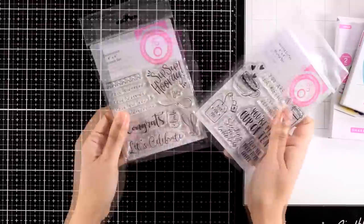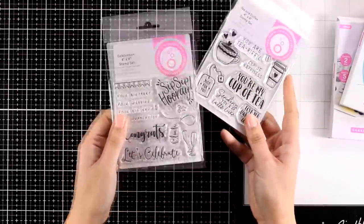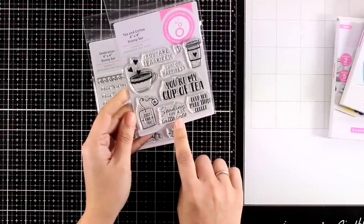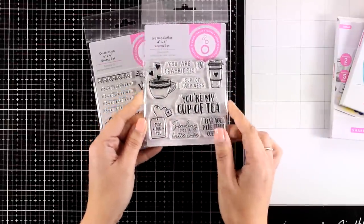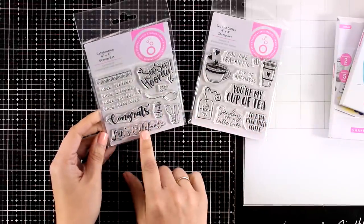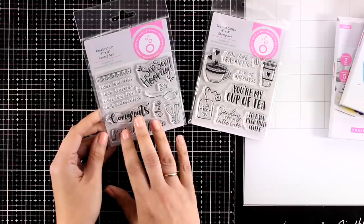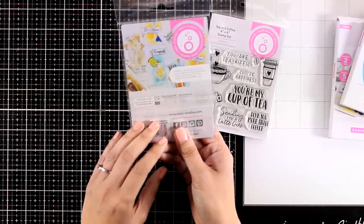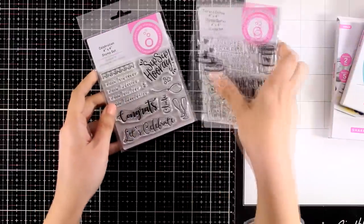Now Tonic Studios has also came up with small sentiment stamp sets. These are 4x4. One of them is the tea and coffee and has everything to do with tea and coffee and the second one is Celebration. Again a 4x4 stamp set with lots of sentiments for birthdays, weddings, for congratulations and things like that. So you can mix and match these sentiments with your shaker sets.